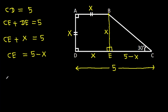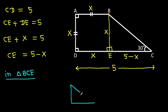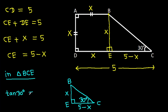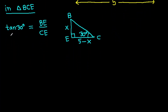And now in triangle BCE — B, C, E — this angle is 90 degrees, this angle is 30 degrees, BE is X, and CE is 5 minus X. And tan 30 degrees will be BE over CE. And tan 30 degrees is 1 over root 3.